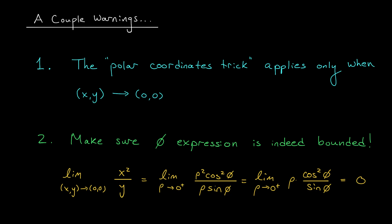Secondly, if we convert to polar coordinates and end up with an expression involving φ, we should always confirm that that expression is bounded. In our last example, we showed that that was indeed the case, but it's easy to get carried away if you're not careful. Take this limit, for example: the limit as (x,y) approaches (0,0) of x² over y. If we convert to polar coordinates, we end up with the limit as ρ goes to 0 from the right of ρ times cos² φ over sin φ. Now, it's very tempting to say that since this term goes to 0, it will pull the whole limit down to 0 with it, but that's simply not true. You see, this expression here is not bounded.